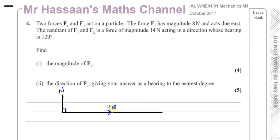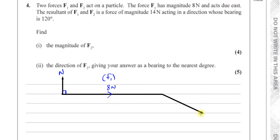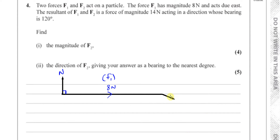This is F1, which is 8 newtons. The resultant of F1 and F2 is 14 newtons at a bearing of 120 degrees. At the end of F1 we draw F2. The resultant joins the beginning to the end of the journey — you draw force 1, then draw force 2 wherever it goes, and then join the beginning to the end: that's the resultant.